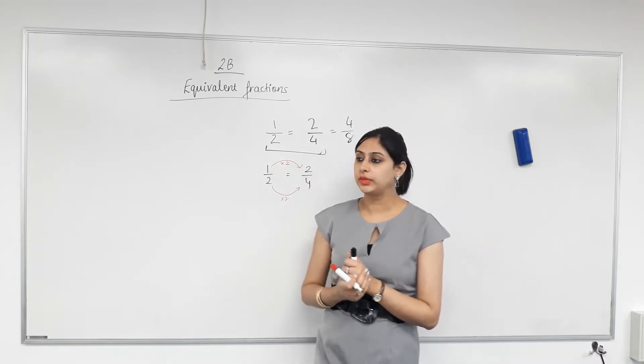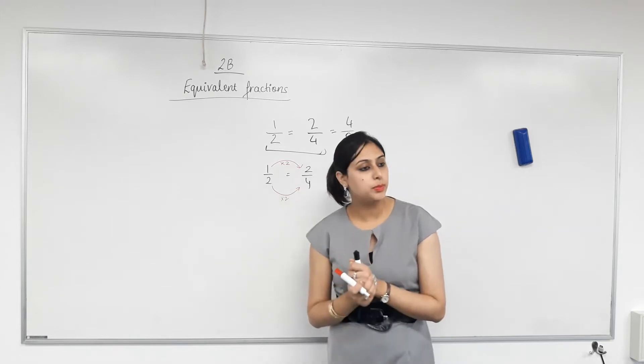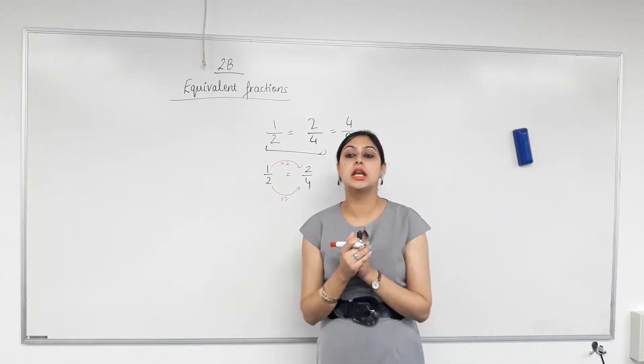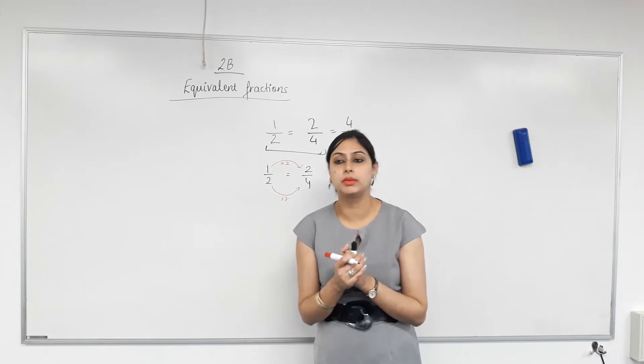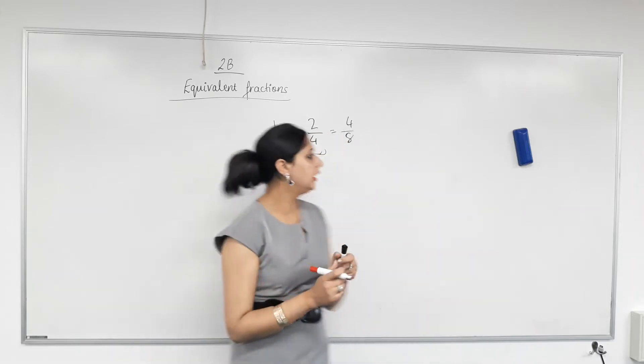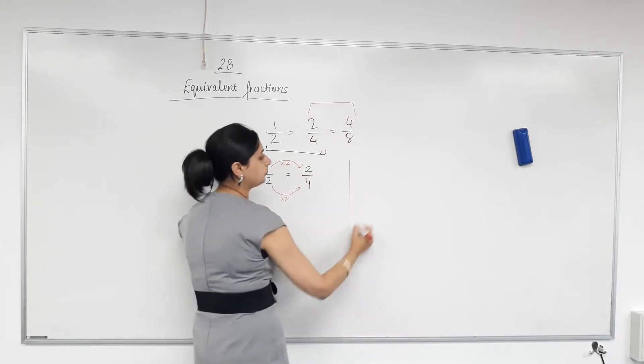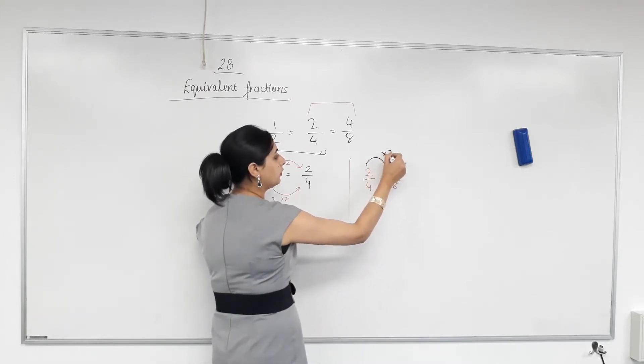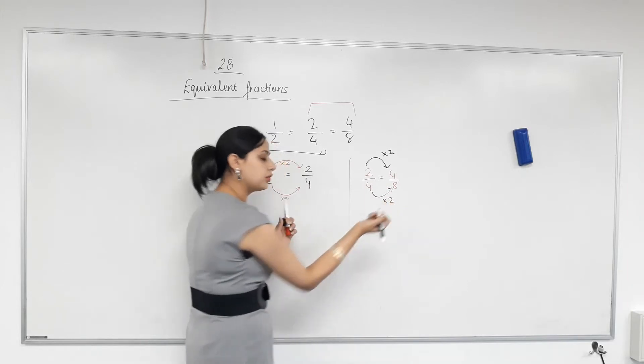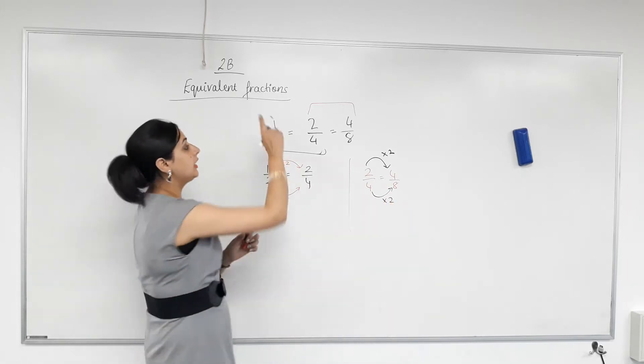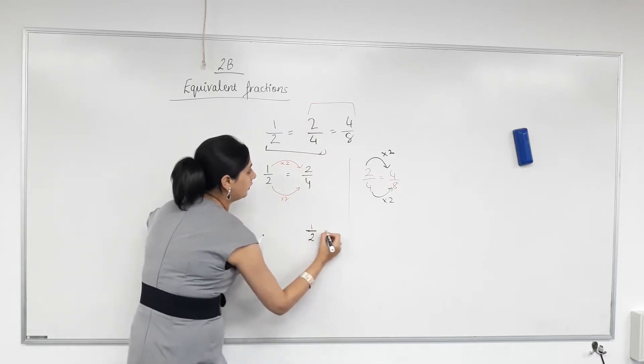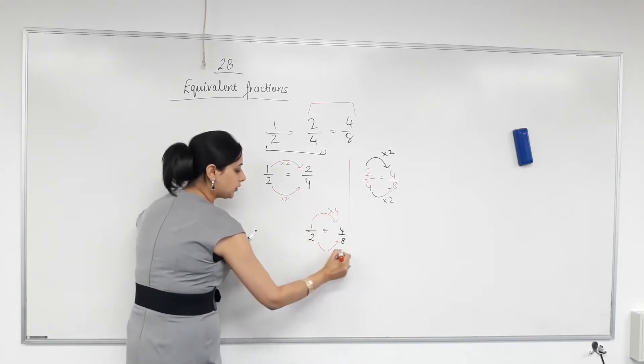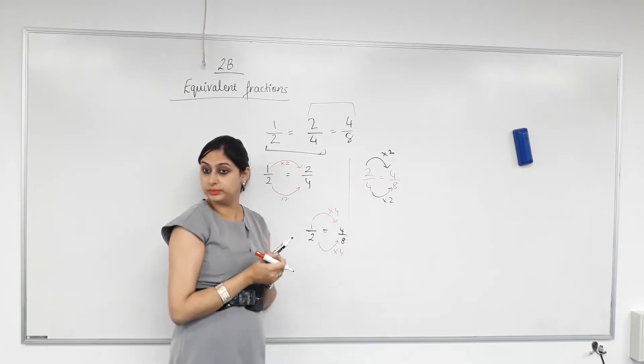When you do that to a fraction, when you multiply the top and bottom of a fraction by the same number, you get another fraction that is equivalent. It represents the same fraction, just with bigger numbers. Happy with that? Yes. Let's check. Let's now take these two. What's two times what is four? Four times what is eight? Two. Have you done the same thing to top and bottom? Yes. Let's take the first and last now. One times four is four and two times four is eight. Right?